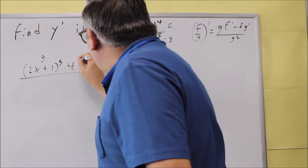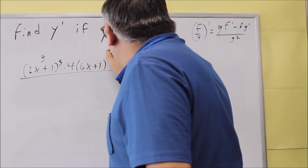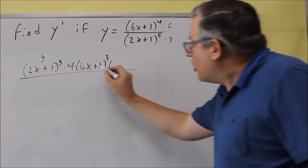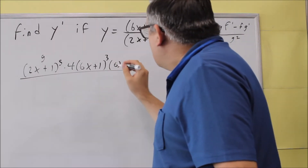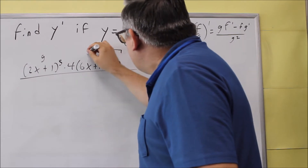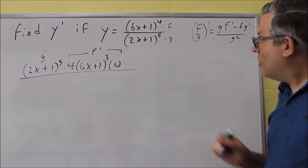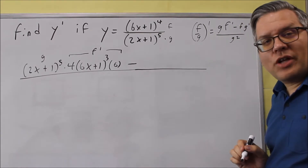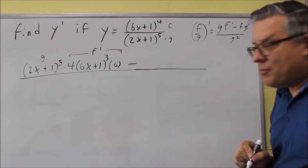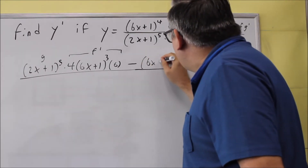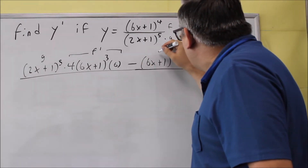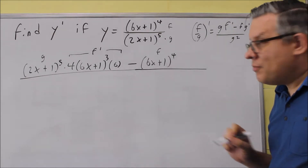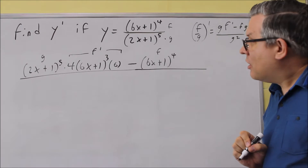The 4 comes down — we do our power rule: 4 times (6x plus 1) to the third power. Don't forget you also have to multiply by the derivative of the inside, which is 6. All of that was the derivative of the top, F prime. In the quotient rule, we have a minus sign next. Now we do the top times the derivative of the bottom. The top is just 6x plus 1 to the fourth power — we write it as is. That's our F.